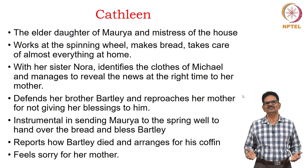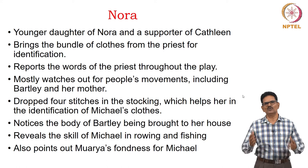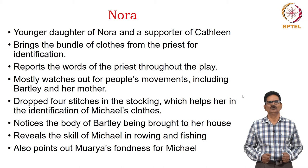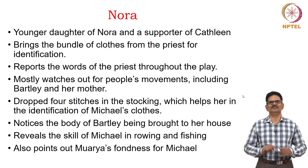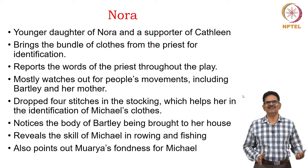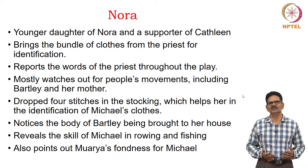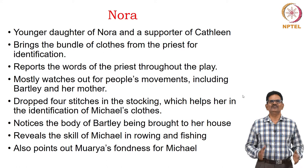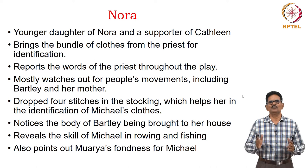Nora is the younger daughter of Maurya who supports Kathleen. She brings the bundle of clothes from the priest for identification. She reports the words of the priest throughout the play, sharing those ideas with her sister. She mostly watches out for people's movements, including Bartley and her mother. She dropped four stitches in the stocking, which helps in the identification of Michael's clothes. She also notices the body of Bartley being brought to the house. She reveals Michael's skill in rowing and fishing and points out Maurya's fondness for Michael.